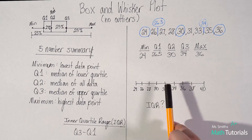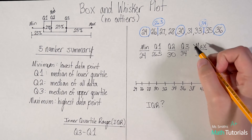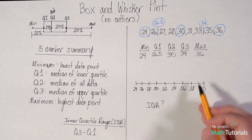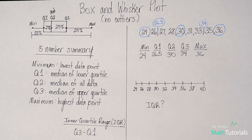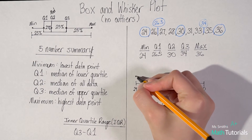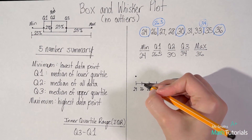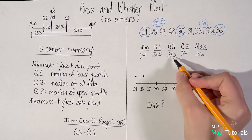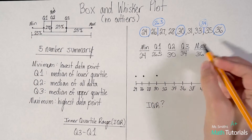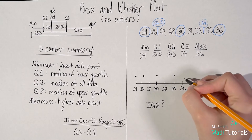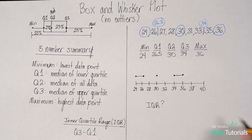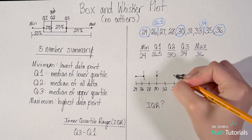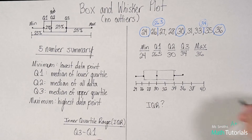Now I have my five number summary and I'm able to start plotting this. Start with your minimum — I went ahead and created a number line that worked for this data set; you will have to create your own that works for the numbers you've been given, spacing them out well. Plot each point: my minimum is at 24, Q1 is at 26.5, Q2 is 30, Q3 is 34, and maximum is 36. The way I create this is I make whiskers with the two outermost points, then build a box with those three inner points. Hence box and whisker plot.